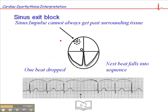In sinus arrest or sinus pause in the past presentation, the SA node failed to fire, and then there was this long pause and then an escape beat. In sinus exit block, on the other hand, the SA node fires normally and continues to fire at its normal rate. But at one point it fires and it cannot escape the surrounding tissue — that's why it's called exit block. It can't exit the surrounding tissue simply because the surrounding tissue is in a refractory period and is not able to respond to another impulse. Consequently, we see this single dropped beat, and the pause is typically short, with the next beat falling exactly into sequence.